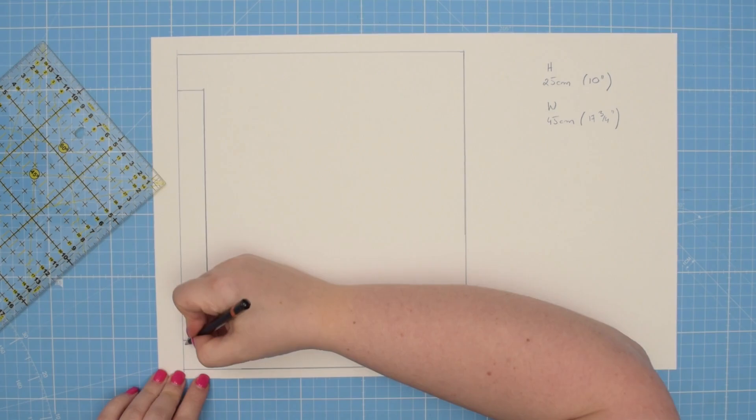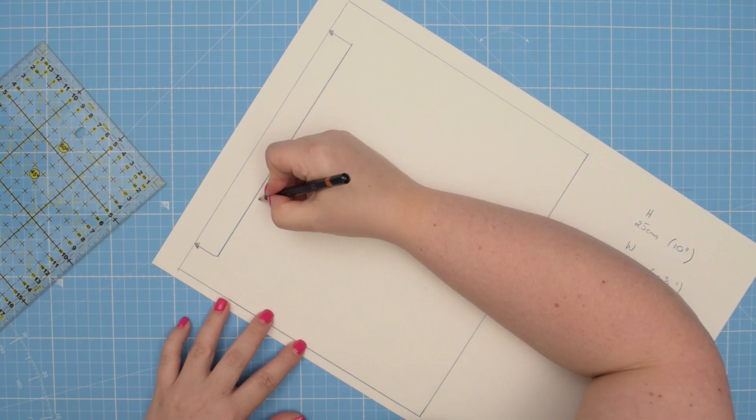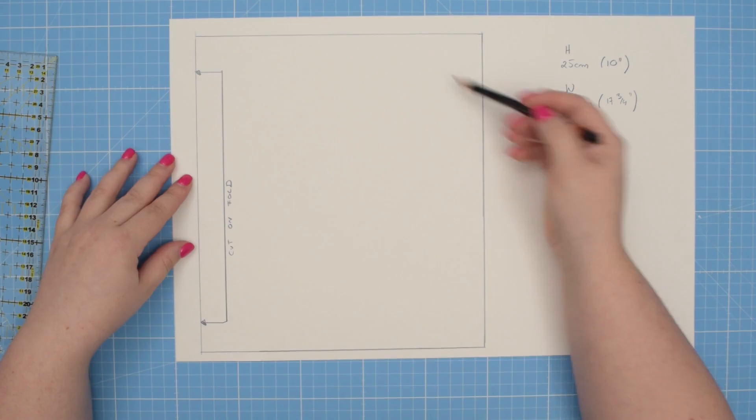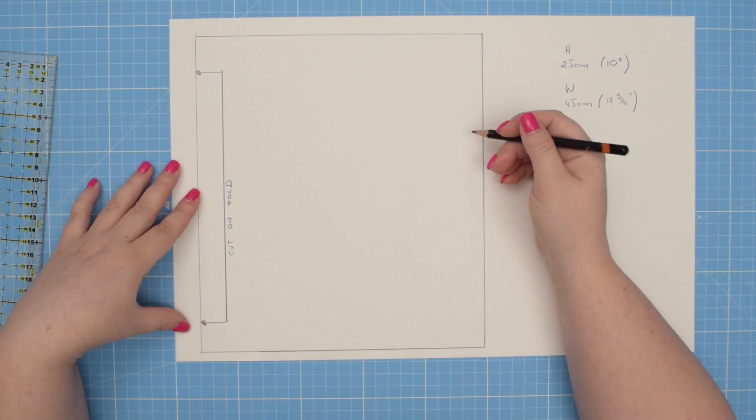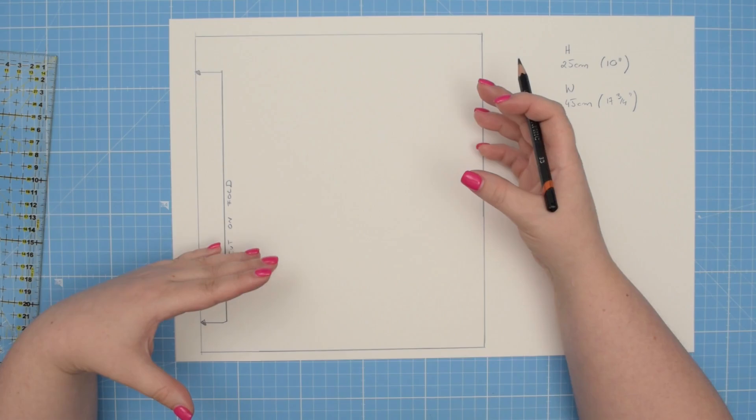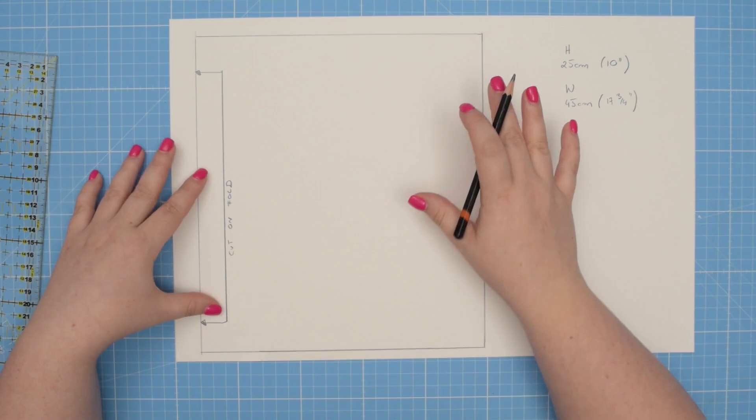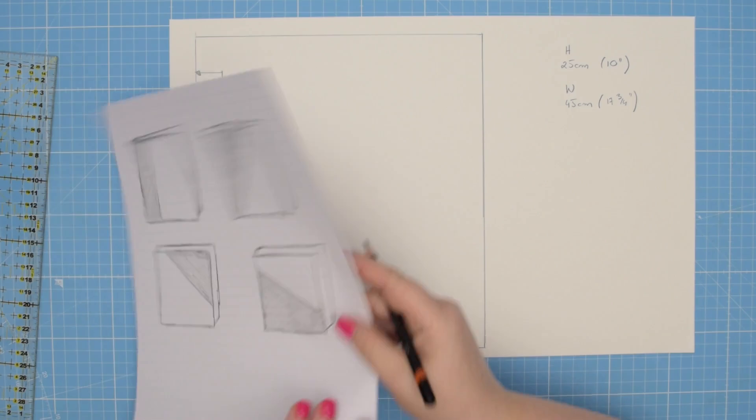You can draw small arrows like this and then write cut on fold. This is the main pattern piece for our binder cover. If you want to have a plain, simple cover, go ahead and label your pattern piece. But because I like to mix different fabric and create a sort of color blocking effect, I'm going to divide my main pattern piece into two different sections.